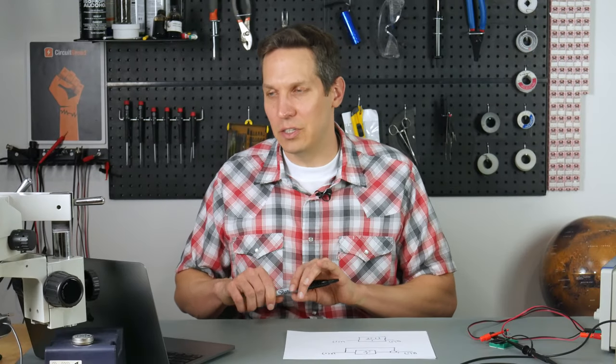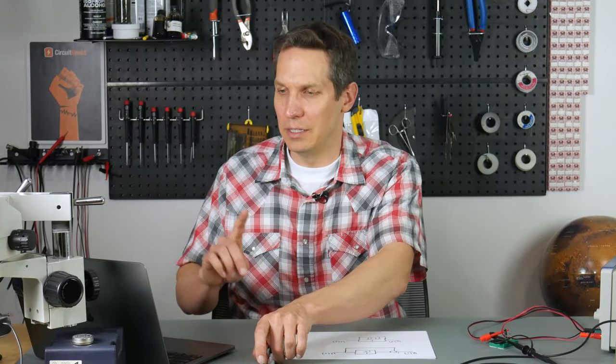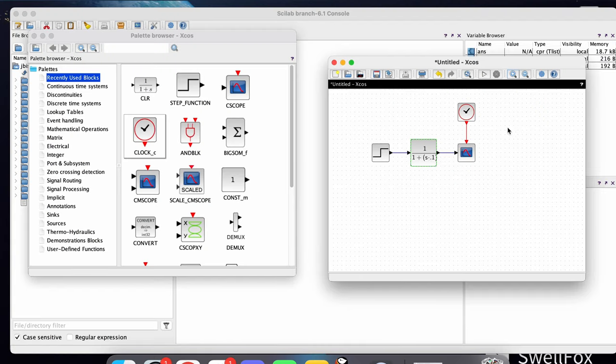So let me go over in the Xcos tutorial, which if you haven't gone over, I highly recommend, we have simply created a system here where we have our unit step input, which I pulled over here from the step function. And this is in my recently used blocks, because I've used it recently. Otherwise, you have to find it elsewhere. And then you have your function right here, you have the oscilloscope, and then you have to have the clock going into the oscilloscope.